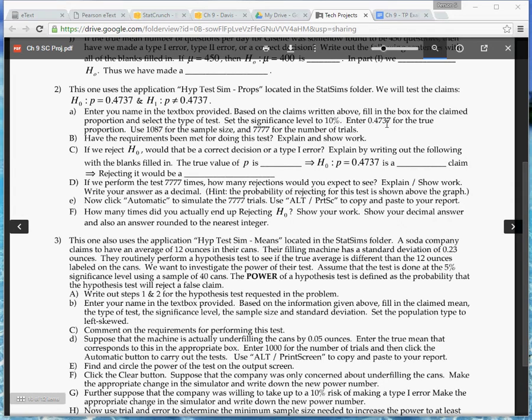For the true proportion, notice they're using this value. That's just because in this example they want H0 to be a true claim. So to kind of mimic this, I'm going to use .444 in my example. I'll go ahead and stick with this sample size of 1087, but I'll do 5,555 for the number of trials.